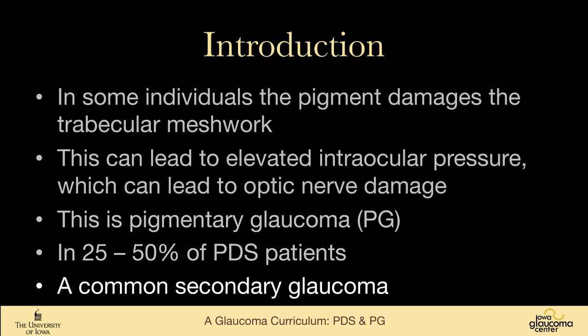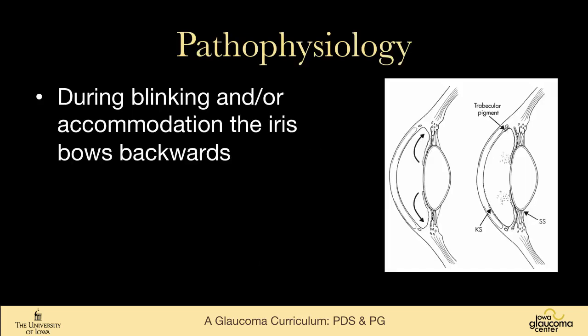This is a very common secondary glaucoma — not as common as exfoliation syndrome, but at least in my population, it's extremely common. The pathophysiology appears to be that during blinking and/or accommodation, the iris bows backwards, as you can see on the right-hand sketch here. The pigment epithelium, which is like coal dust, rubs against the zonules and frees up pigment.